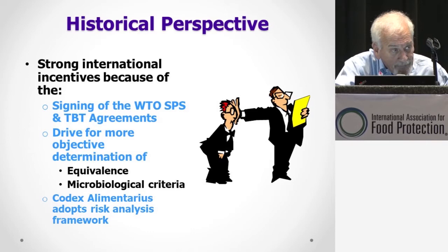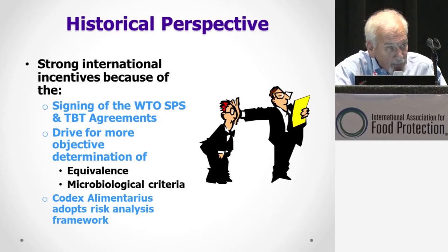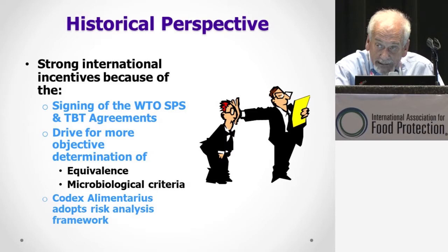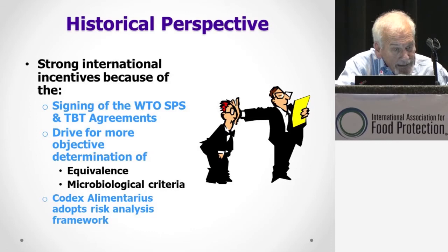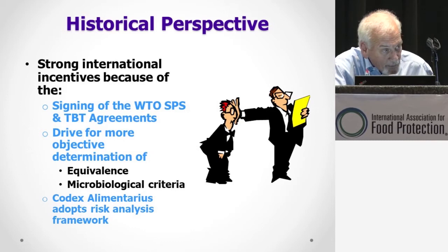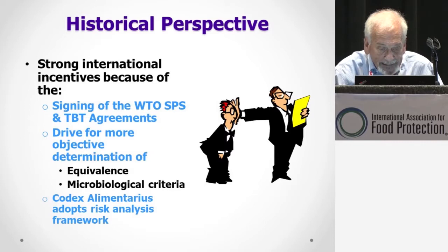We also had some really strong incentives to be able to do this. One of them in the United States was the 1994 Agricultural Department Reorganization Act that for the first time demanded that we would do risk assessments for major regulations — something we were supposed to be able to do, even though we hadn't a clue how to do it at the time. We also saw at this time the signing of the WTO SPS and TBT agreements that basically said that you needed to do a risk assessment if there was a challenge in terms of food safety issues, particularly around equivalence and microbiological criteria.